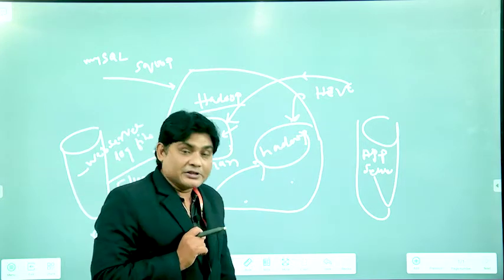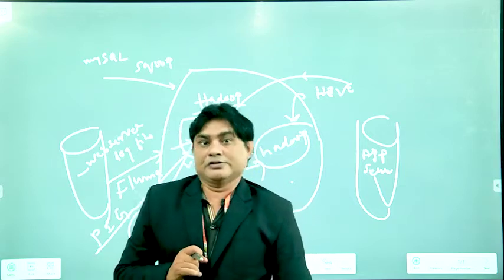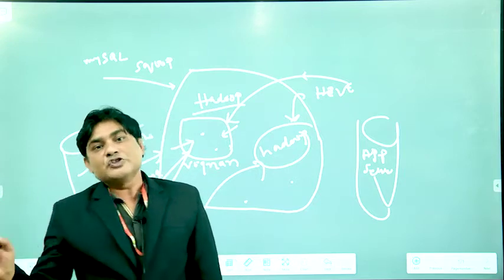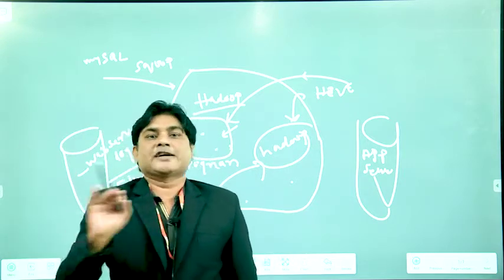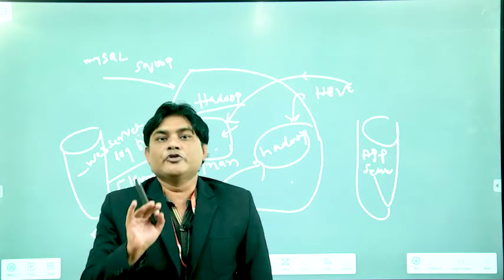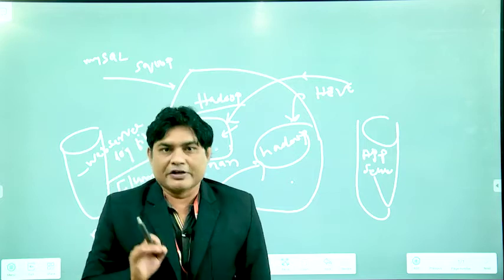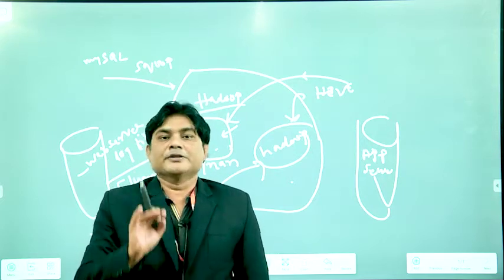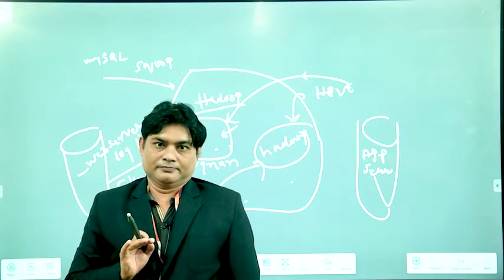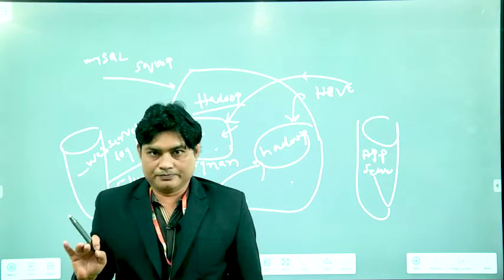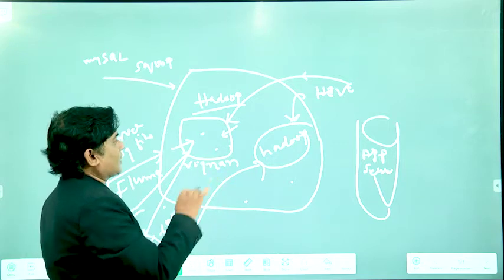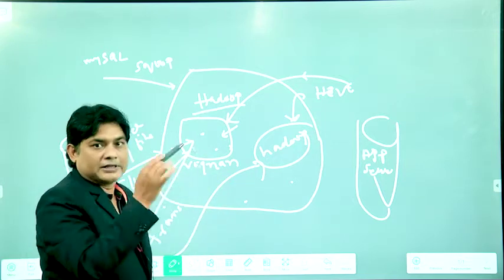So in these scenarios Pig is very useful. Pig cannot be used for pure unstructured data, and Pig cannot be used where results need to be very fast because Pig is somewhat slow compared to MapReduce programs.